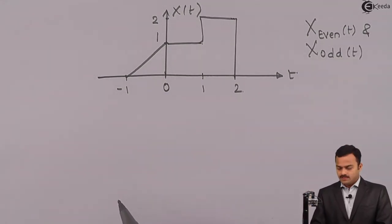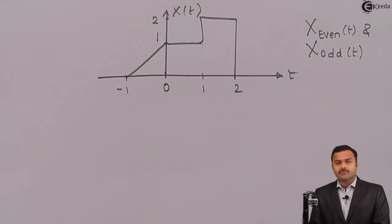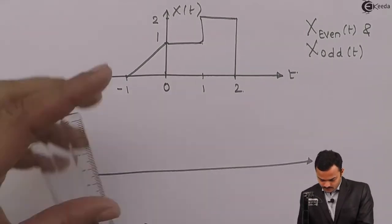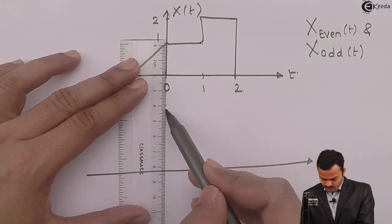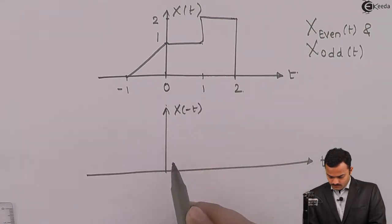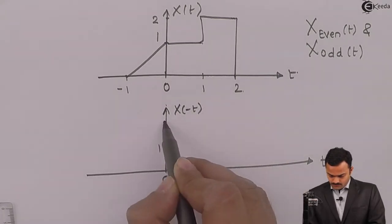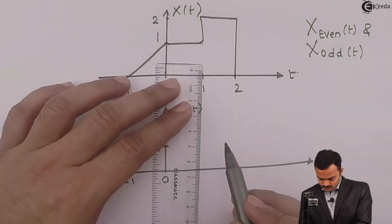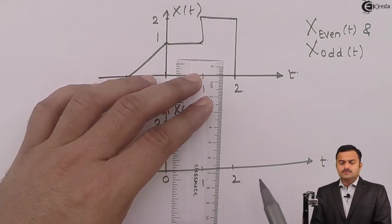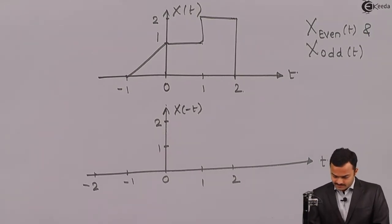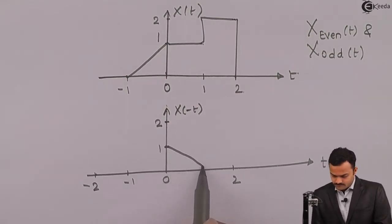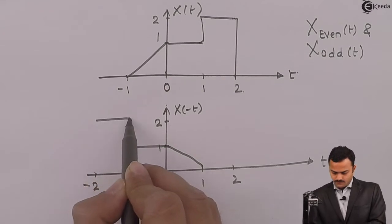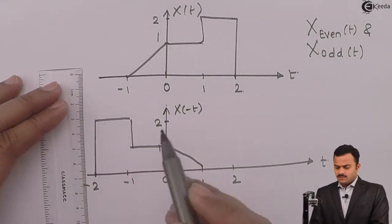The procedure is very simple. Step number one is to get the time-reverse version of this signal, which is x of minus t. We will get a time-reverse signal, and x of minus t is like this.